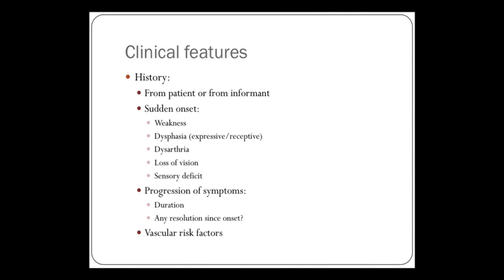Clinical features — this is absolutely key. Sometimes you'll be able to get the history from the patient themselves; however, if they've had a severe stroke you will rely on witnesses or the family. Sudden onset is the very important feature of the history. Any of these: weakness, dysphasia, dysarthria, loss of vision, or sensory deficit.